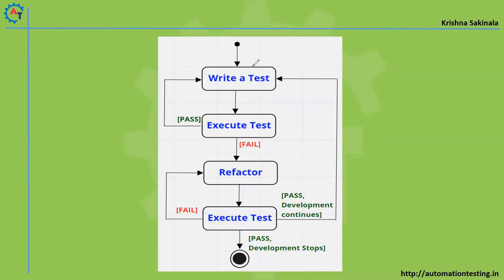In the diagram: first you write a test and execute it. If it passes, write another test. If it fails, you need to refactor the code according to your requirement. Then you execute the test again — if it passes, your development continues.